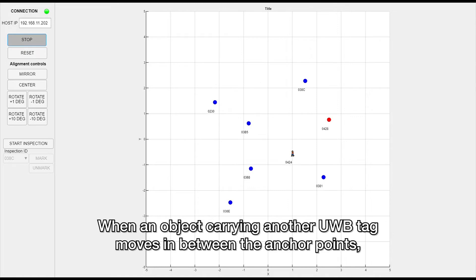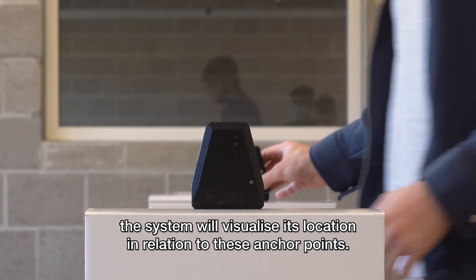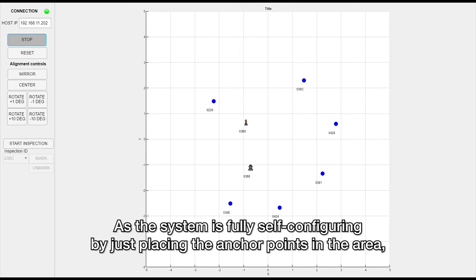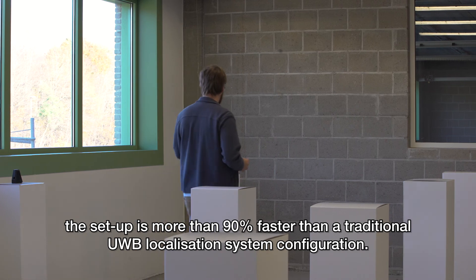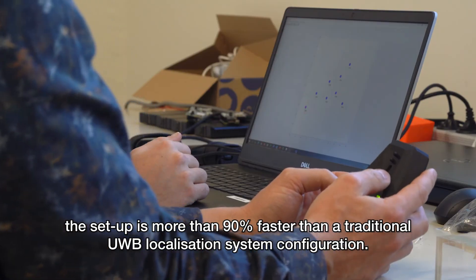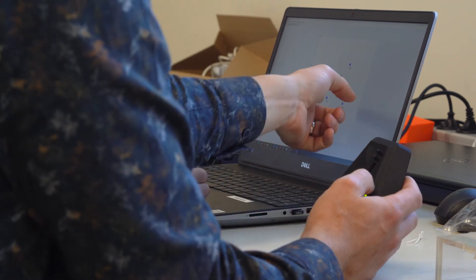When an object carrying another UWB tag moves in between the anchor points, the system will visualize its location in relation to these anchor points. As the system is fully self-configuring by just placing the anchor points in the area, the setup is more than 90% faster than a traditional UWB localization system configuration.